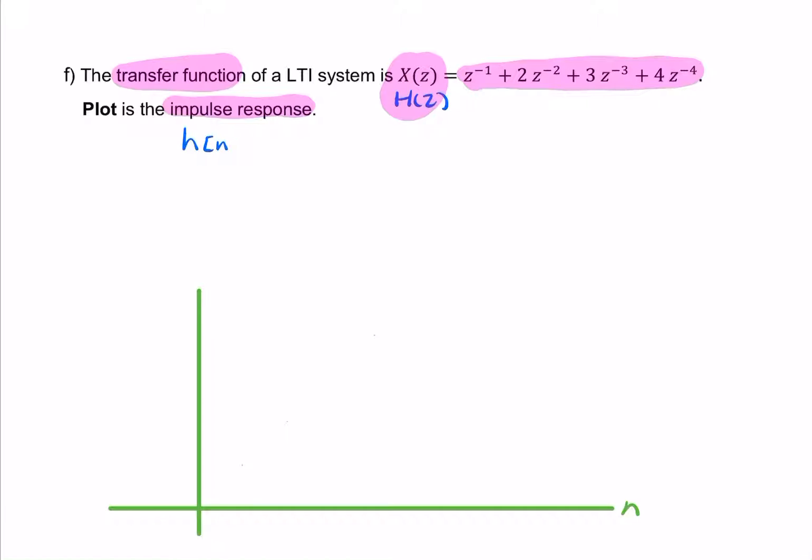That's h of n. And that's simply the inverse z-transform of h of z. So one way to do that is to simply apply the definition of the z-transform, but backwards.